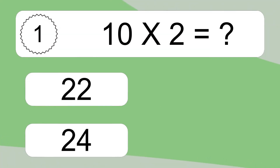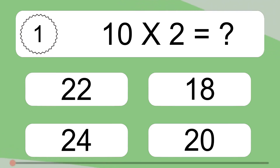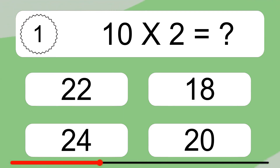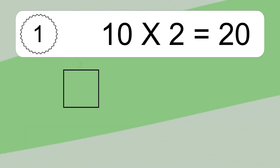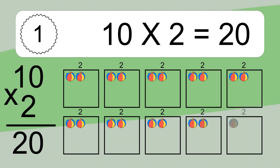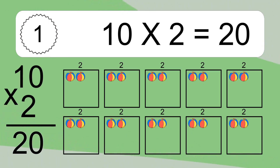10 times 2 equals what? 10 times 2 equals 20. We have 10 boxes, and each box has 2 colorful balls inside. If you count all the balls in all the boxes together, you will have 10 times 2 balls. This equals 20 balls.